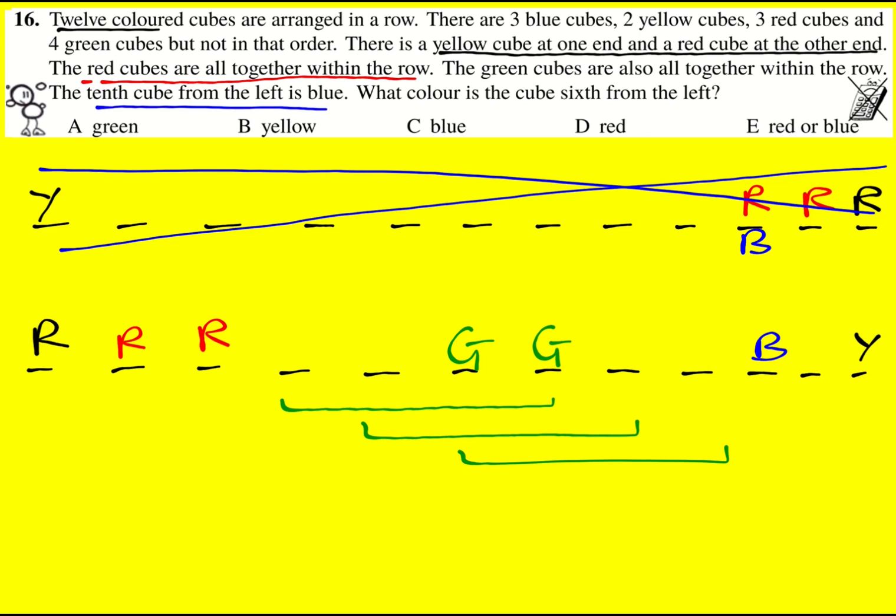And we're asked, what color is the cube sixth from the left? Well, do we have enough information? One, two, three, four, five, six. Yes, it's got to be this green one here. So I've used some logic and deduced it must be green.